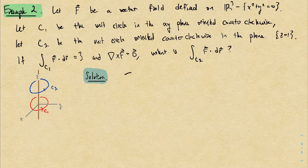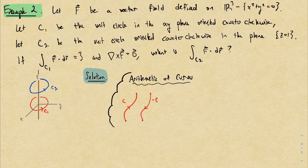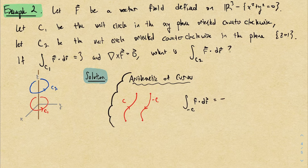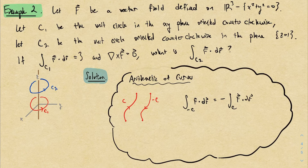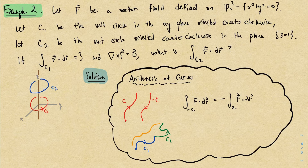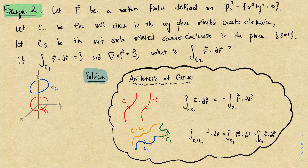Before proceeding, recall some basic curve arithmetic. Negative C represents the same curve in the opposite direction, and the vector line integral over −C is negative the integral over C. We can also add two oriented curves: C₁ + C₂ means follow C₁ then follow C₂, and the integral over C₁ + C₂ equals the integral over C₁ plus the integral over C₂.